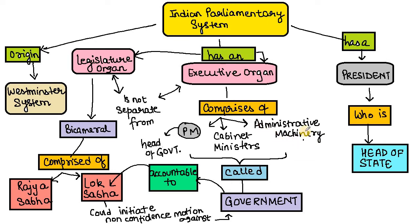In the executive, we have the administrative machinery of IAS, IPS, IRS, civil servants, and cabinet ministers — they are known as the government. The government is accountable to Lok Sabha because people have voted for them, so they are answerable to Lok Sabha. Lok Sabha can also initiate a non-confidence motion against the government, which we studied in the motions class — Part 4 of Parliament.